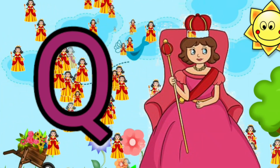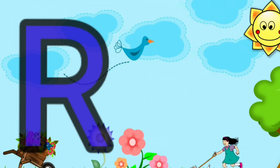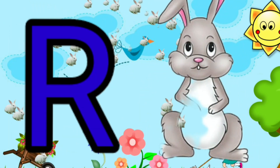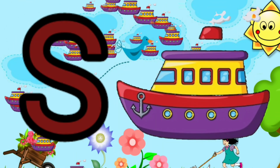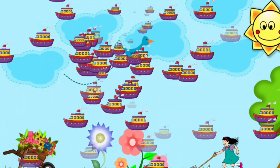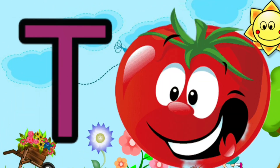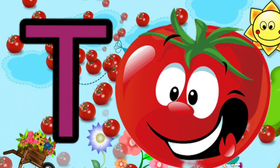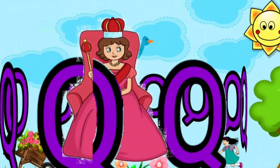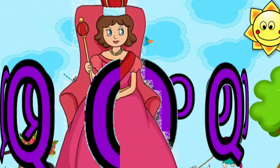Q is for queen, quick-quick queen. R is for rabbit, r-r-r-rabbit. S is for ship, sh-sh-ship. T is for tomato, t-t-t-tomato.